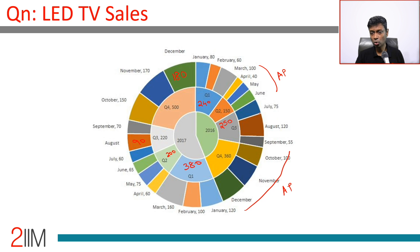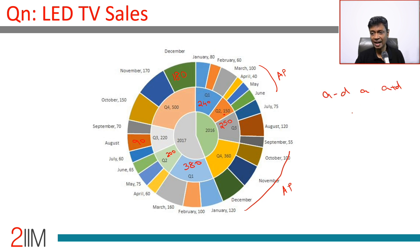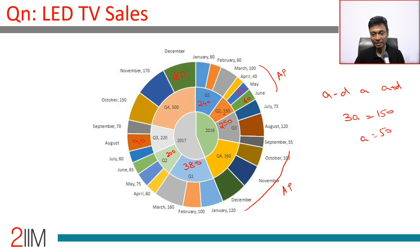Now for the two quarters with arithmetic progressions. For Q2 2016, the sum of the three numbers is 150. Writing three terms in AP as A minus D, A, A plus D, we get 3A equals 150, so A equals 50. The middle term is 50, giving us 40, 50, 60. Same idea for Q4 2016: the total is 360, so the middle term is 120, giving 100, 120, 140.